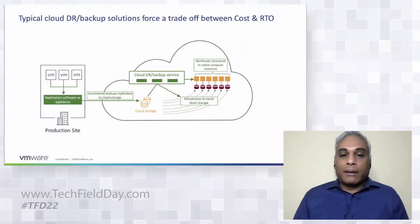First, I want to show you how a typical backup and DR solution works in the cloud and some of the trade-offs you have to deal with. On-prem, you have a bunch of workloads — VMware VMs running — and then you deploy software on-prem to back up the data, replicate it periodically, maybe daily or every six hours, and store the data into cloud storage.